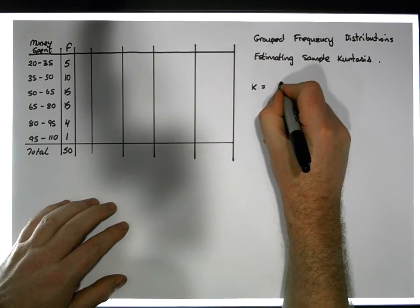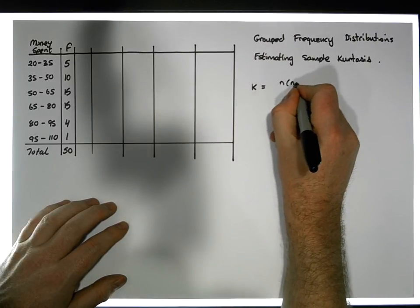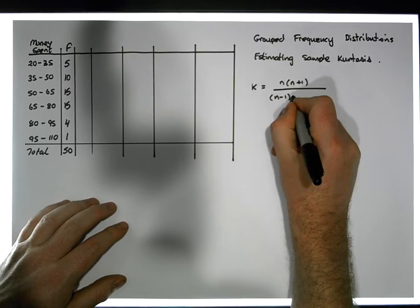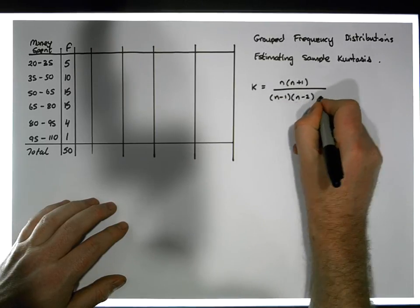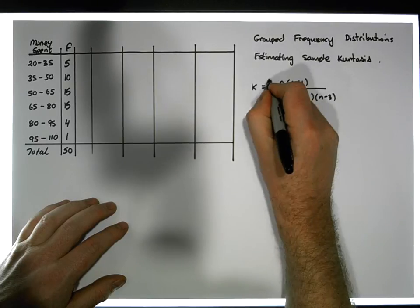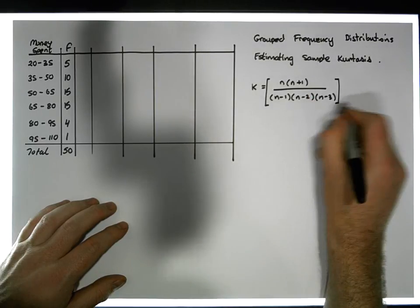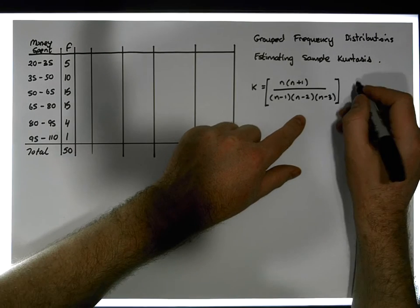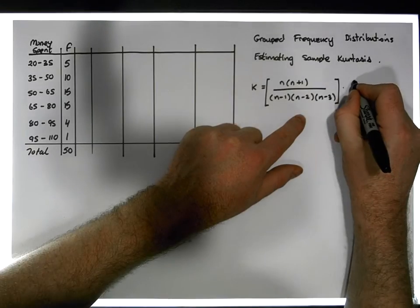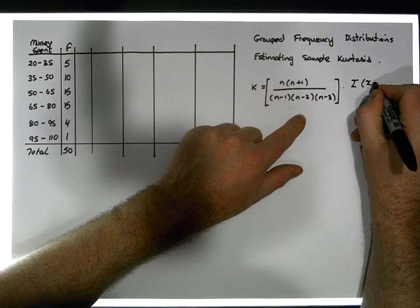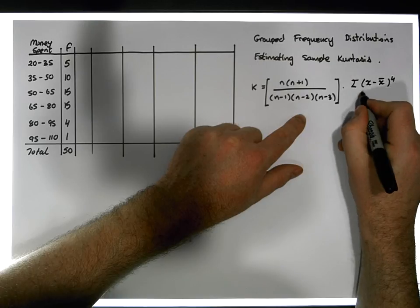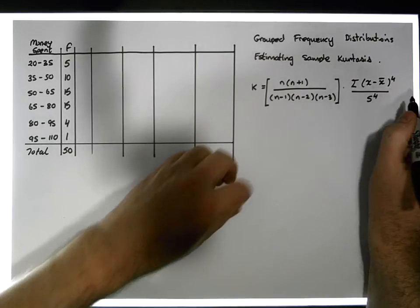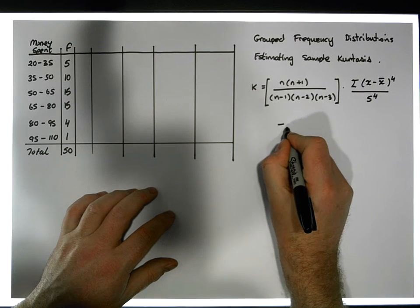The formula looks like this: K, representing kurtosis, equals n times (n+1) divided by (n−1) times (n−2) times (n−3). This factor compensates for the sizes of our samples, and it's multiplied by the sum of the observations minus the sample mean raised to the power of 4, all divided by the standard deviation raised to the power of 4.